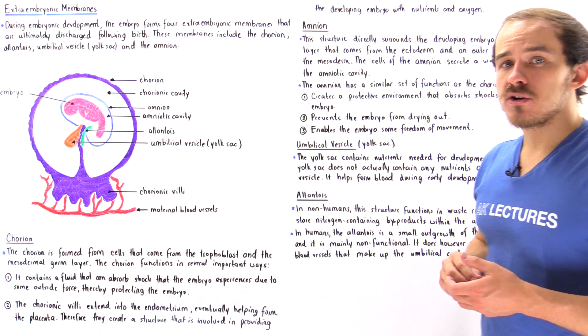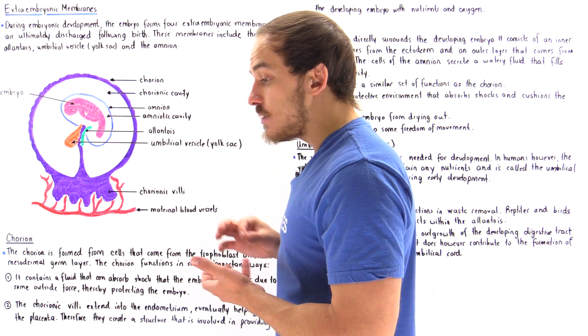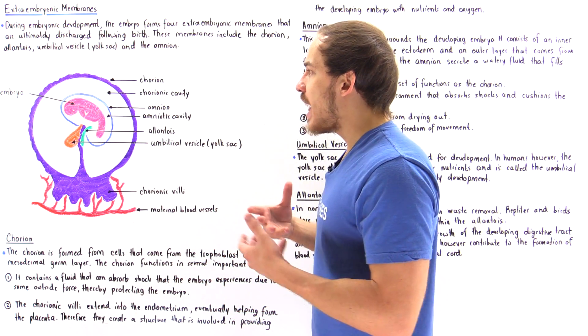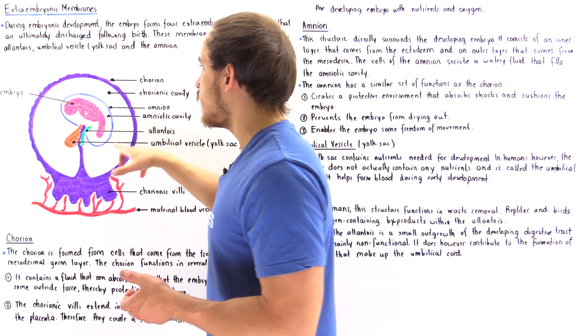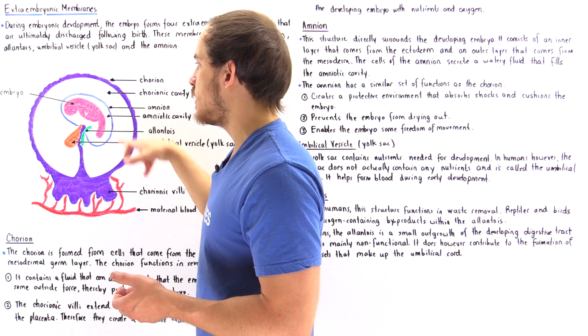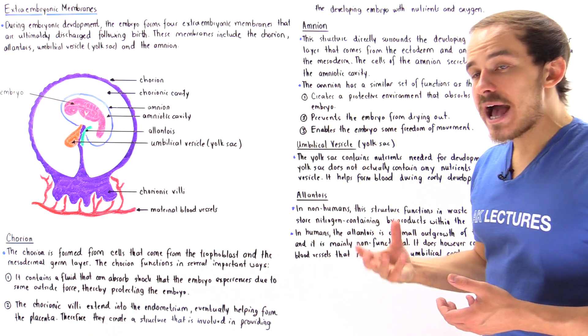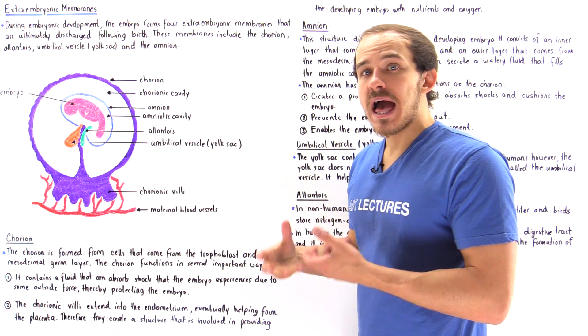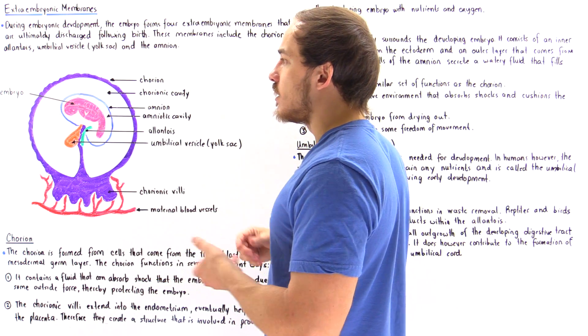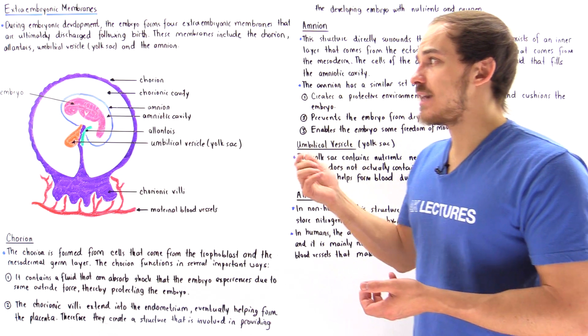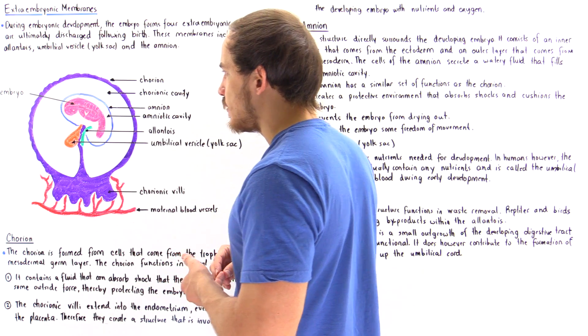And the chorion functions in two important ways. Firstly, it creates a special fluid we call the chorionic fluid that is located inside the chorionic cavity, this space shown here. And what that fluid does is it absorbs some of that shock and the force that is experienced as a result of the outside environment. And what that does is it protects that developing embryo from any sort of damage.